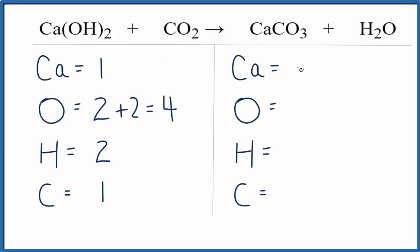Over on the product side. Calcium, I have one. Oxygens, I have three. And then I got to remember this one here, plus the one, that'll give me four. Hydrogens, I have two right here. And then I have just the one carbon in the middle.